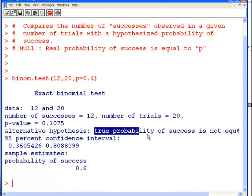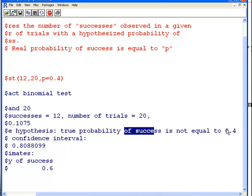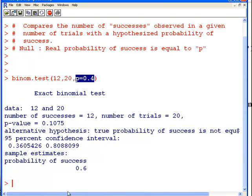The alternative hypothesis: true probability of success is not equal to 0.4. I just went for 0.4 there just to sort of make it a little bit hard. So the null hypothesis is that it is equal to 0.4, and we failed to reject the null hypothesis. There's not enough evidence to suggest that it's not 0.4.